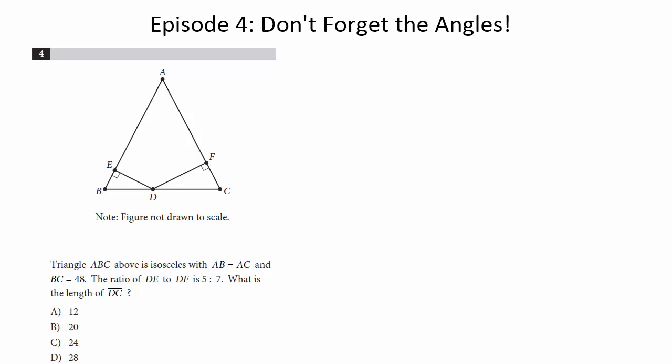Let's take a look at this question and you'll see what I mean by don't forget the angles in a second. So ABC above is isosceles with AB equaling BC, so we'll fill this in in our picture. AB equals AC and BC is 48, so this whole thing is 48.